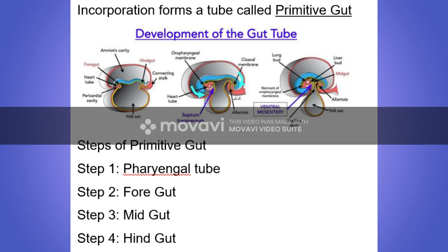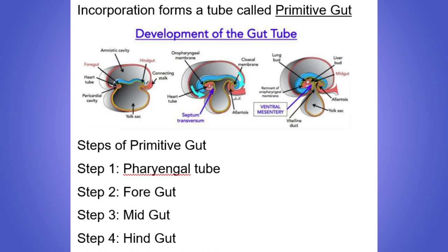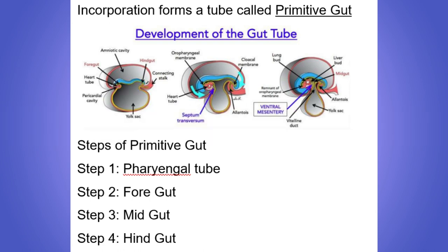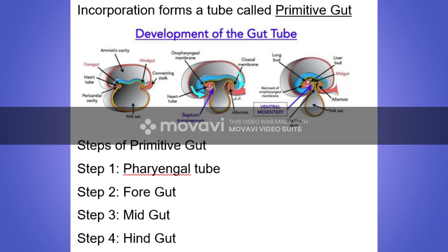The pharyngeal tube is part of the foregut, extending from the oropharyngeal membrane to the respiratory diverticulum. The foregut starts from the respiratory diverticulum to the liver bud. The midgut extends from the right one-third to the left two-thirds, up to the transverse colon. The hindgut starts from the transverse colon to the cloacal membrane.